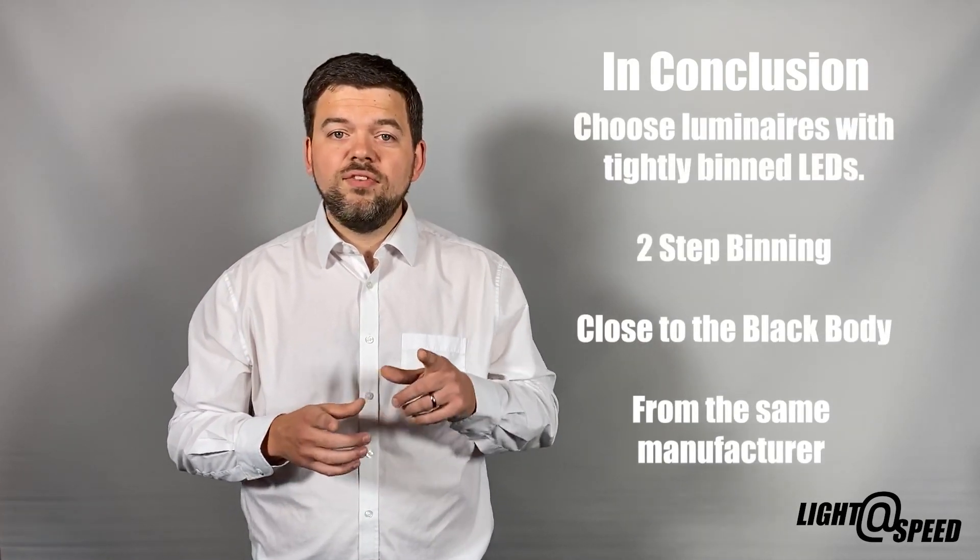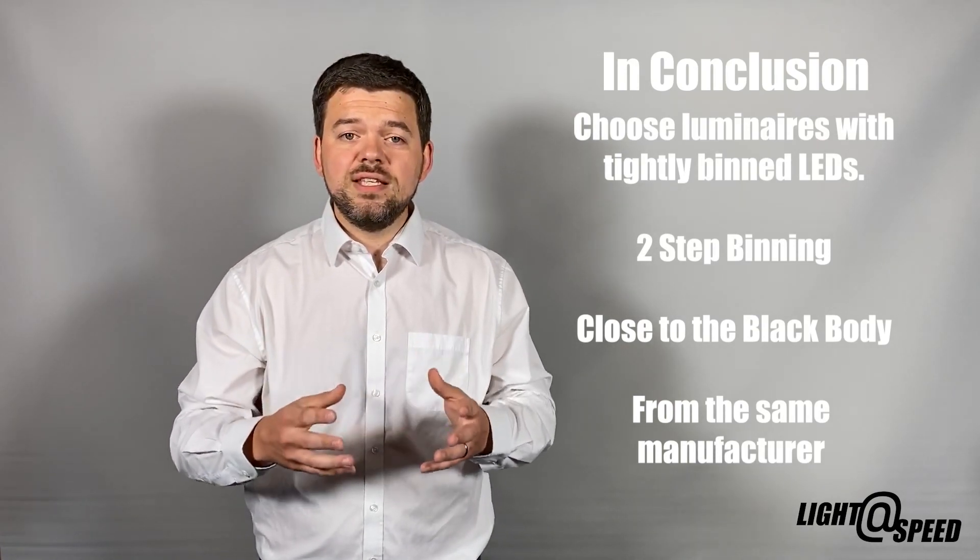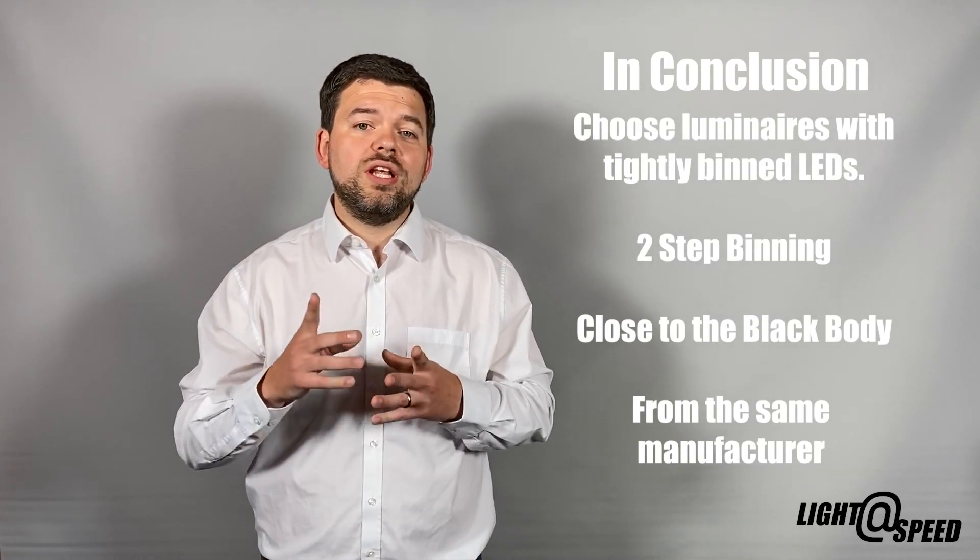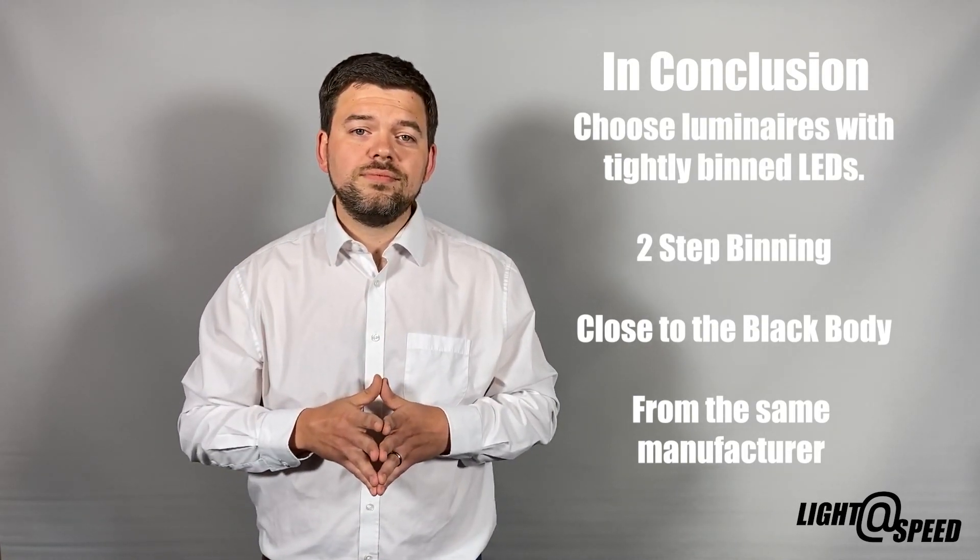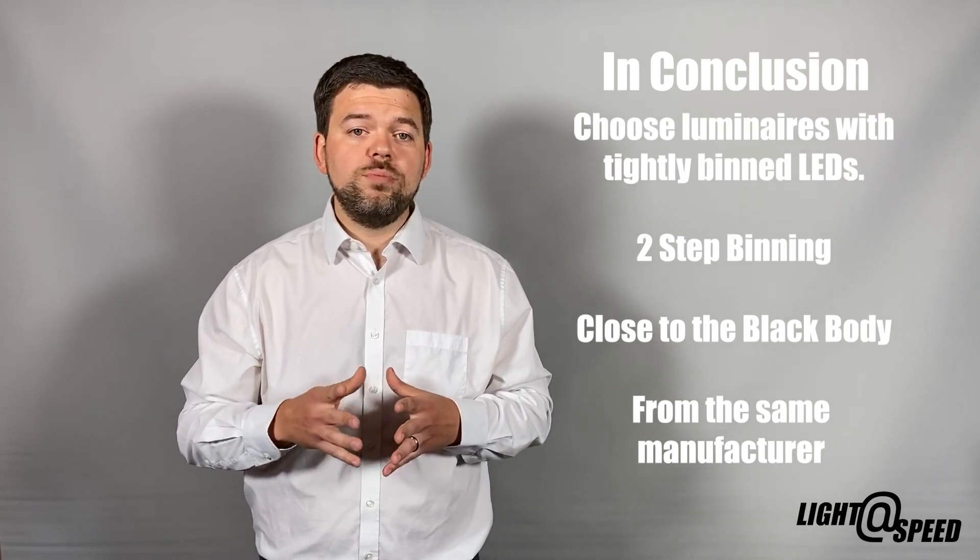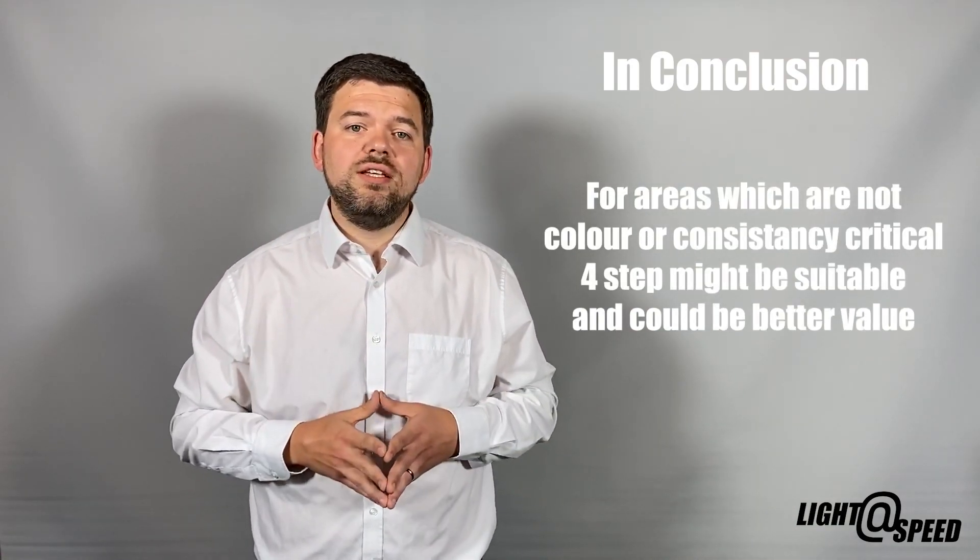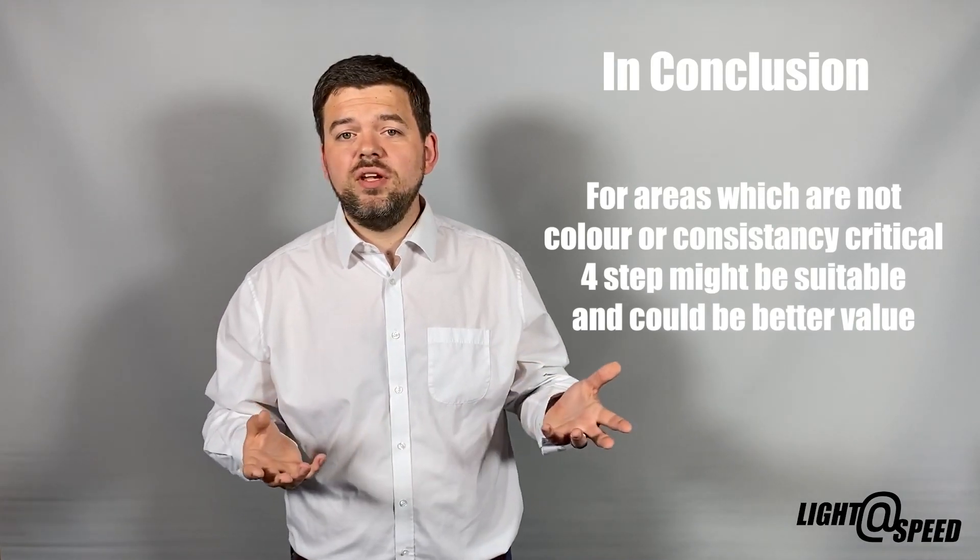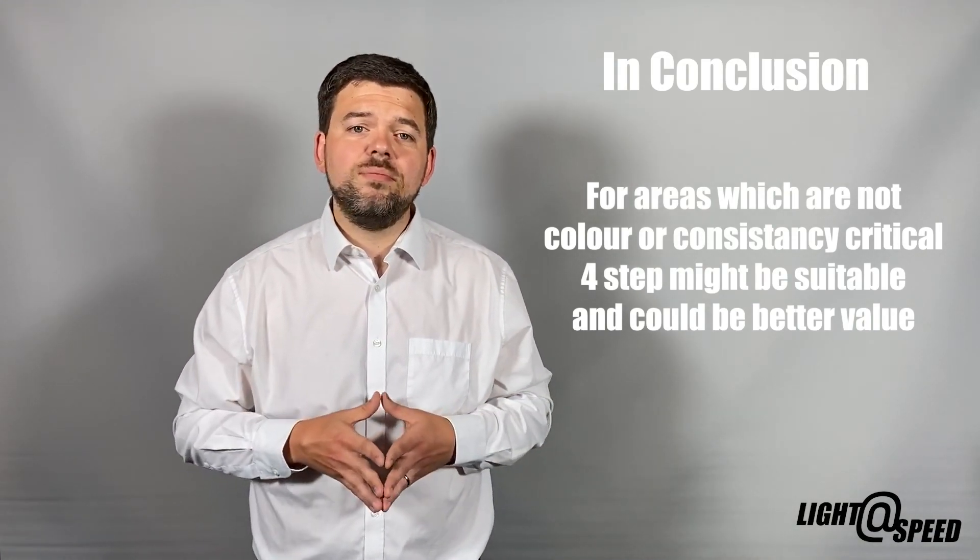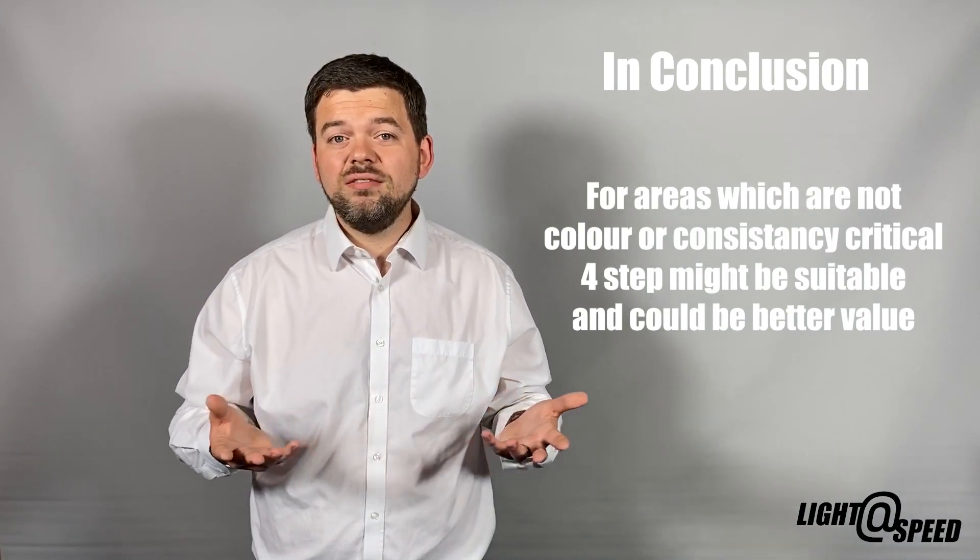So in real world terms, if you're developing a project or an area of a project that requires the best quality light with the best consistency, you want to have the tightest chromaticity bins and so should pick a manufacturer who can deliver two-step binning. Ideally they would be from the same manufacturer as their starting point should be the same, but you might have an area that you might feel doesn't need perfectly matching lights - it might be a back of house area where it's not public facing. The client might feel the best value for money is with a lower cost product and then four steps or higher is probably fine.